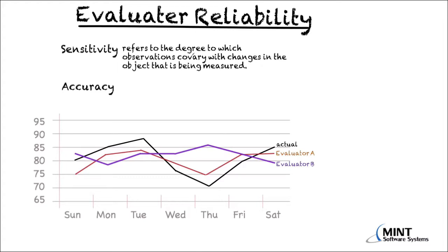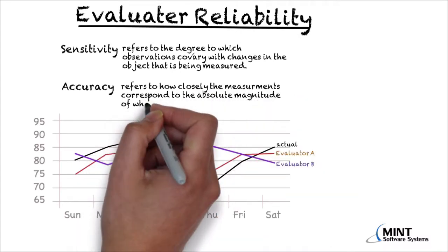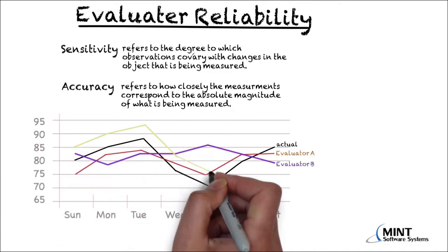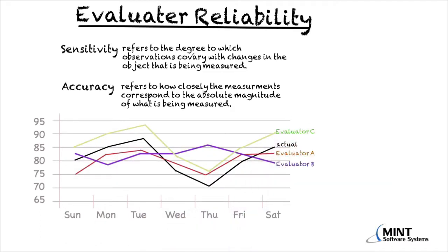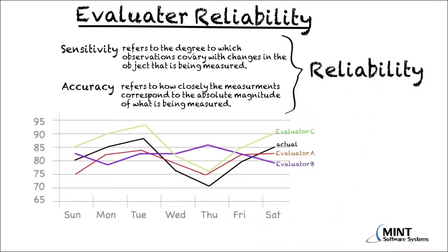The second part of reliability is accuracy. Accuracy refers to how closely our measurements correspond to the absolute magnitude of what is being measured. This can be seen if we look at Evaluator C, who is extremely sensitive to actual variations in the temperature — his estimates co-vary precisely with the true temperature — but who consistently overestimates the temperature by 5 degrees. We would conclude that Evaluator C is not very reliable. So in sum, reliable measurements must be both sensitive and accurate.